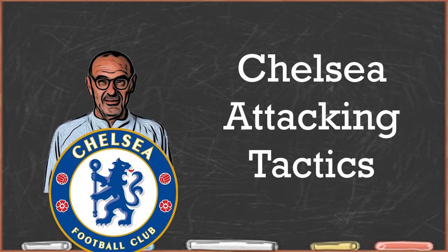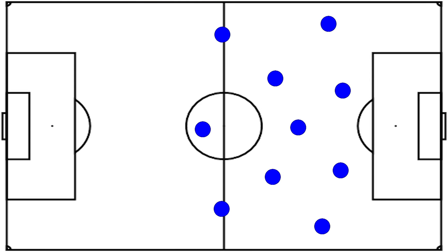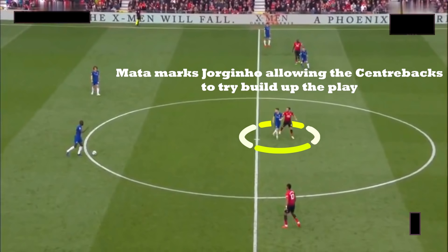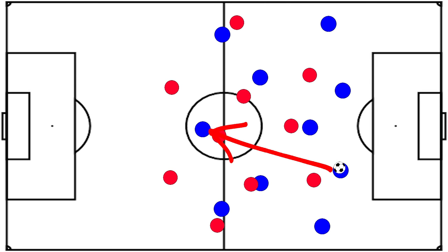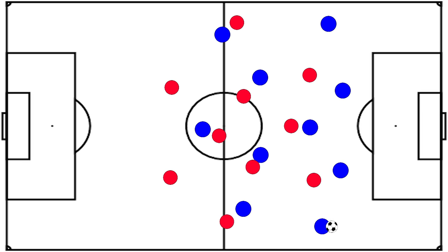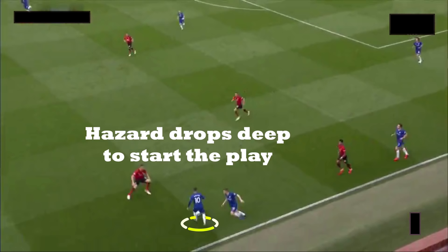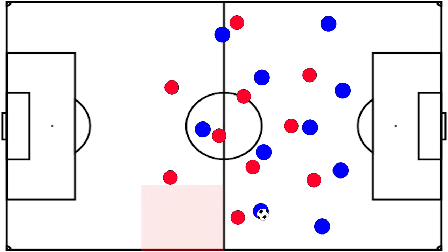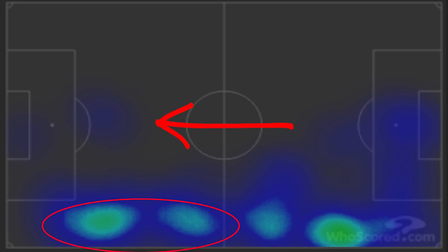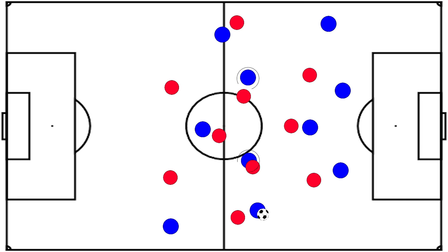Now let's have a look at how Chelsea found success in the match, starting with their attack. As usual they looked to play out from the back, with Jorginho receiving the ball off the centre-backs. However, United often used Mata to either man-mark Jorginho or cut passing lanes towards him, preferring Chelsea's centre-backs to build up play and forcing them into long aerial passes. To counter this, Eden Hazard would drop into the left-hand channel to begin the play, freeing up space beyond him for Alonso, who was aggressive going forward as shown by his heatmap. Kovacic and Kante were also willing to run into any spaces vacated.